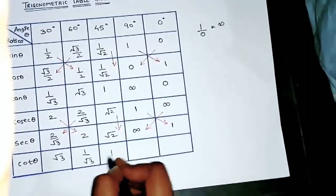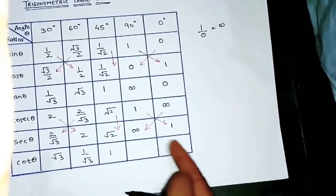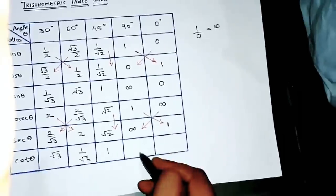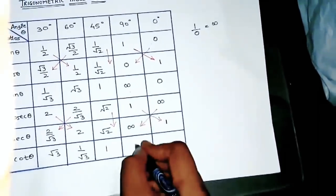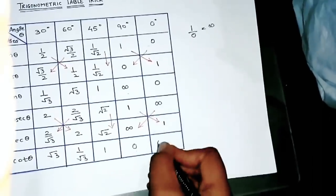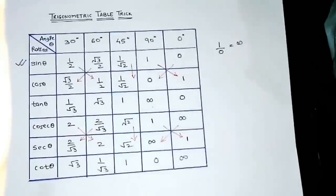And now for cot, cot is the opposite of tan, so it will be reverse way. √3, √3 upon 1 means it will be 1 upon √3. Here it will be 1. Now in this case, remaining it is just a cross.